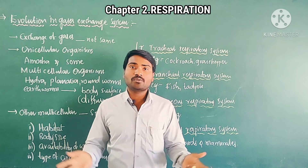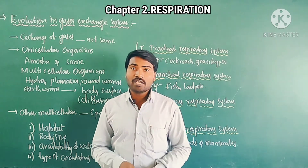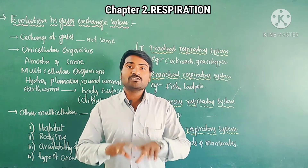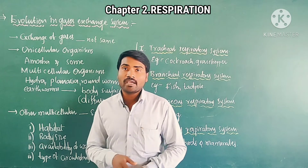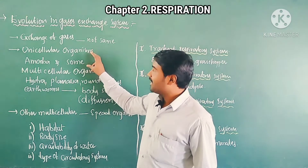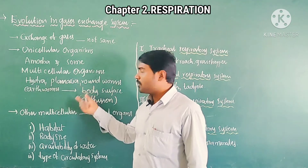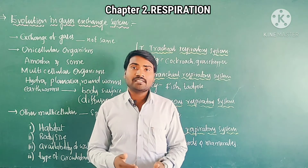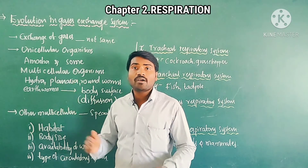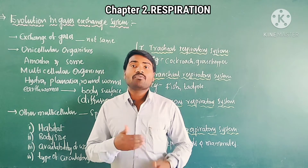In unicellular organisms like amoeba, paramecium, and in multicellular organisms also, like hydra and earthworms, gas exchange takes place through their body surface by a process called diffusion. In other higher multicellular organisms, like human beings, they have developed different types of organs for gas exchange.